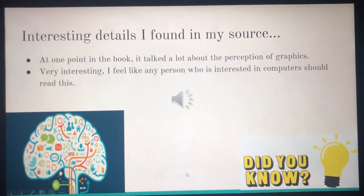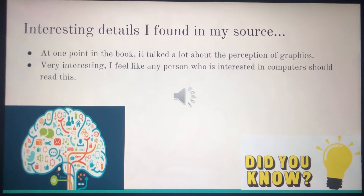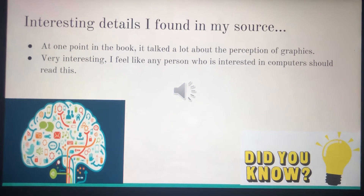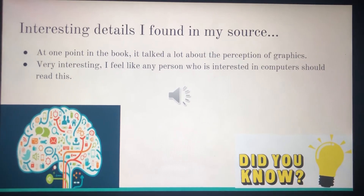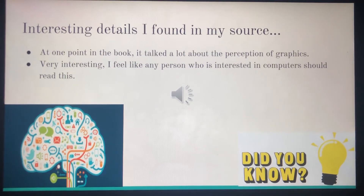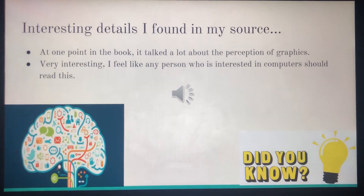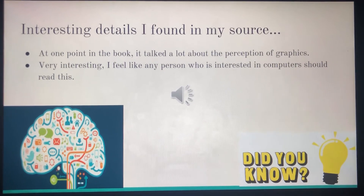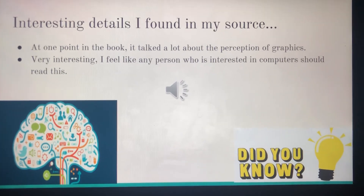Some interesting details I found in my research source: at one point in the book it talked a lot about the perception of graphics and how much that has an effect on the computer user. I think that's a very cool thing because our eye plays so many tricks on us and allows us to see things in different perspectives. Some facts I found were: the image on the retina is upside down, the retina is front-back inverted, the retina does not detect red, and photoreceptors are suppressed by light. Those are very cool facts about the eye and how you perceive computer graphics.